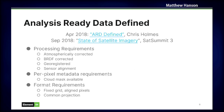A couple of years later, Chris Holmes wrote a blog post defining what analysis ready data is, which is pretty much similar to what Landsat defined: the data is level-two, atmospherically corrected, BRDF corrected, geo-registered, and aligned to a common grid.